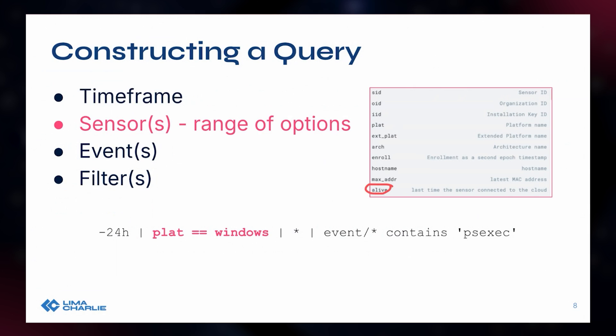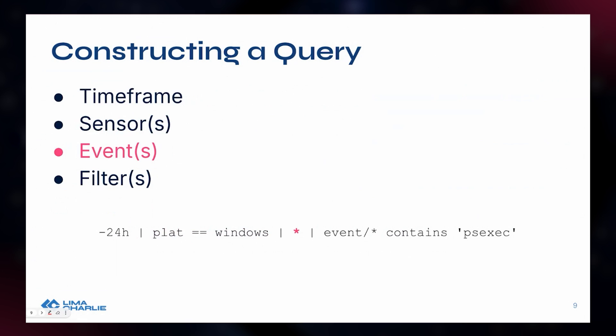There's also the interesting option to base your query against a point in time and also against sensors being online or alive — that might be useful depending on the query you're running or the information you're trying to find. Your sensor range can be very narrow or very vast if you need it to be.